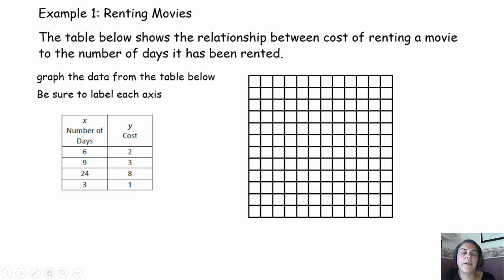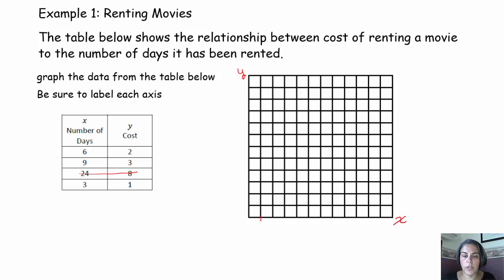What I'd like you to do now is take this same scenario and graph the data from the table on the axis shown below. Quick reminder: this is our x-axis, our independent variable; this is our y-axis, our dependent variable. Just graph the three smaller points for now — go ahead and go by 1 unit on each axis. Take a minute, pause the video, graph those points, and then we'll come back and discuss what this graph looks like and whether or not we know that this is proportional.